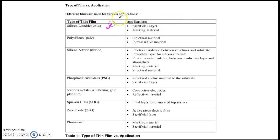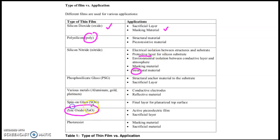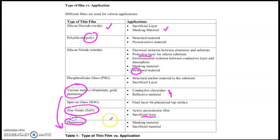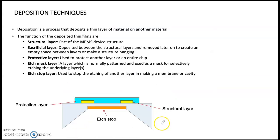For the material part, there are many materials used for MEMS devices. First is silicon oxide, used in oxidation — it serves as a sacrificial layer or masking material. Second is polysilicon, used for structural and piezoresistive purposes. Third is silicon nitride, used as a structural material or protective layer. Then we have zinc oxide, which is a piezoelectric layer and can also serve as a sacrificial material. For conductivity we use aluminium, gold, and platinum as electrodes. For photolithography, the key material is photoresist, used as a masking material.